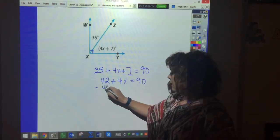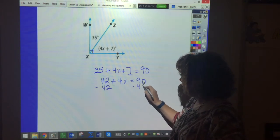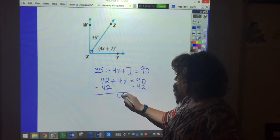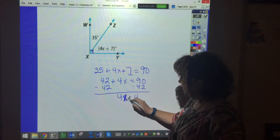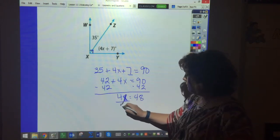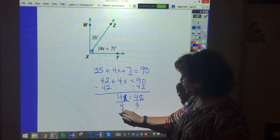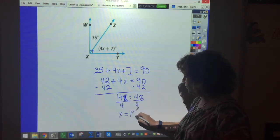And now I'm going to subtract 42, subtract 42. So I get 4X equals 48. So I'm going to divide by 4, divide by 4. And you already have in your head X equals 12.